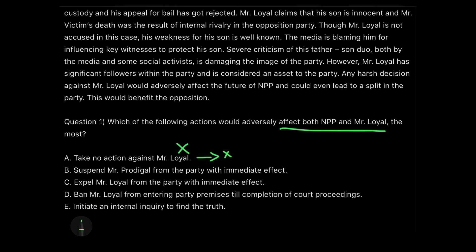Option B says 'suspending Mr. Prodigal from the party with immediate effect.' As I've mentioned in my reading comprehension videos, proper nouns are very important to note. Here we are talking about suspending Mr. Prodigal, not Mr. Loyal. This may affect Mr. Loyal indirectly but not directly. Since it doesn't directly affect Mr. Loyal, it's not a perfect answer — but we'll keep it in consideration until we go through all the remaining options.